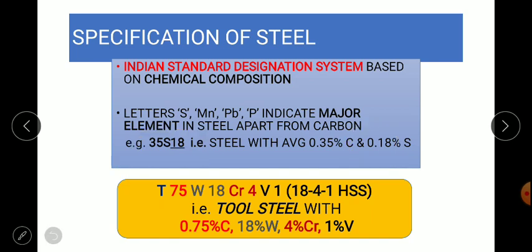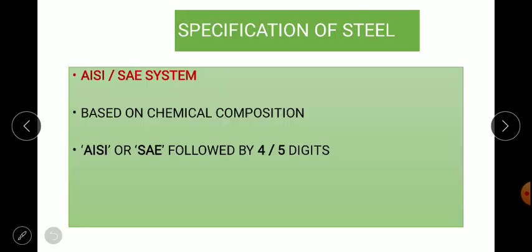Another type of designation: T 75 W 18 Cr 4 V 1, which is HSS high speed steel. T indicates tool steel, 75 in red color indicates percentage of carbon divided by 100. W with no underline means 18 percent tungsten, Cr indicates chromium with no underline 4 percent, and vanadium of 1 percent.